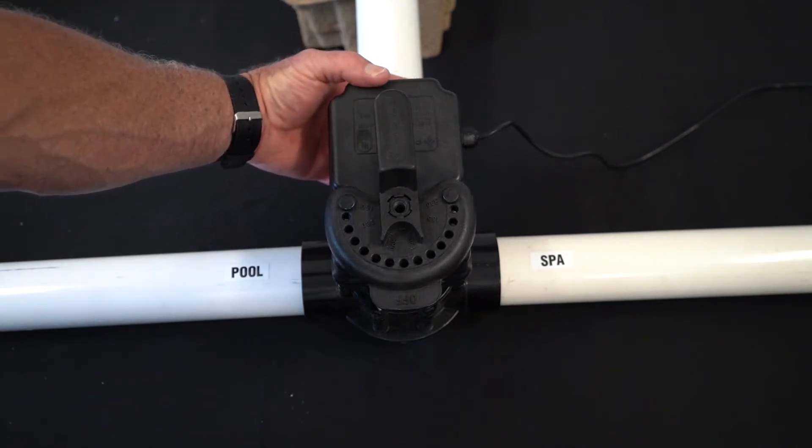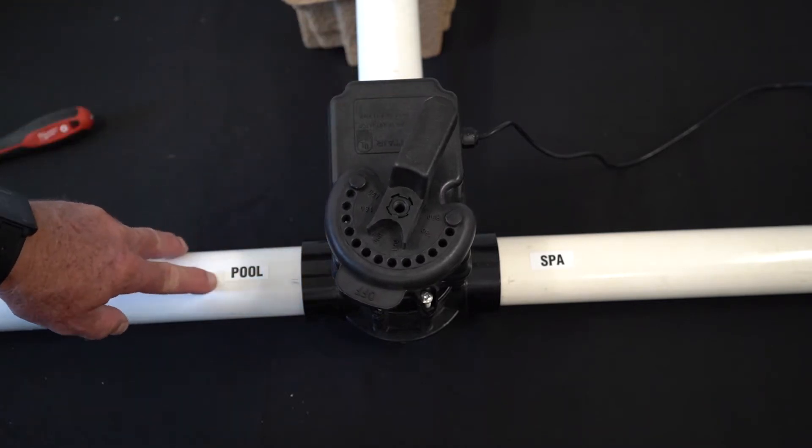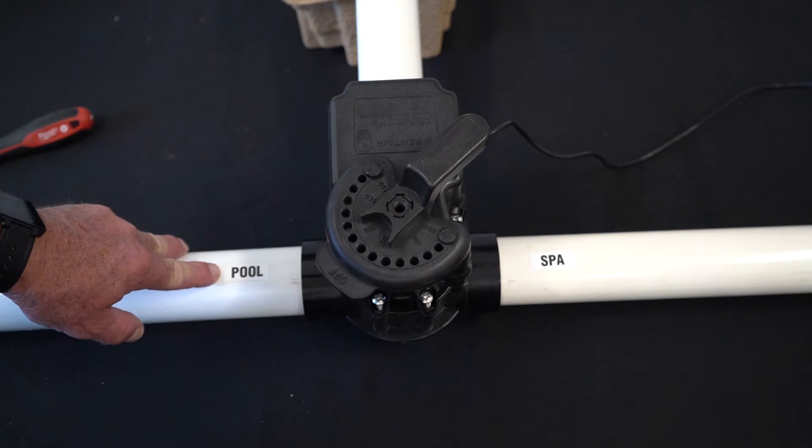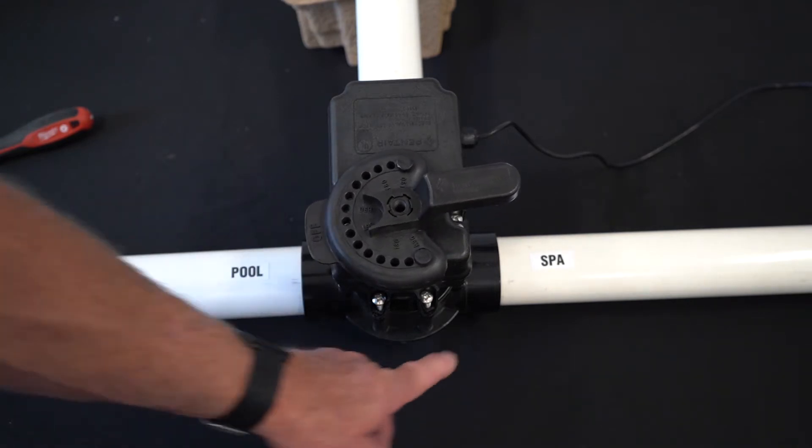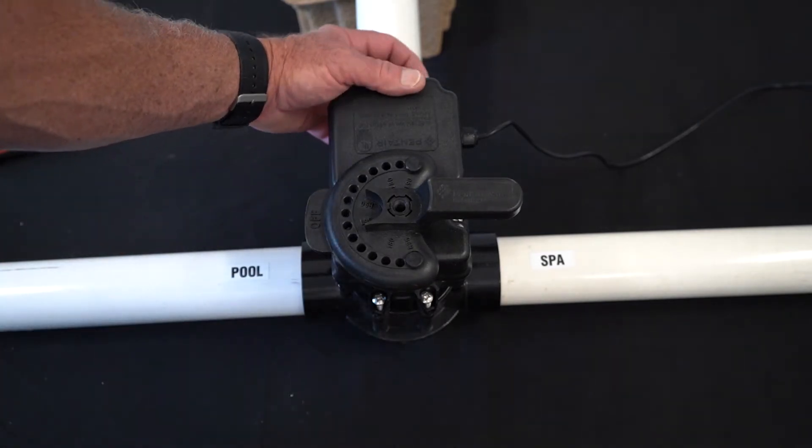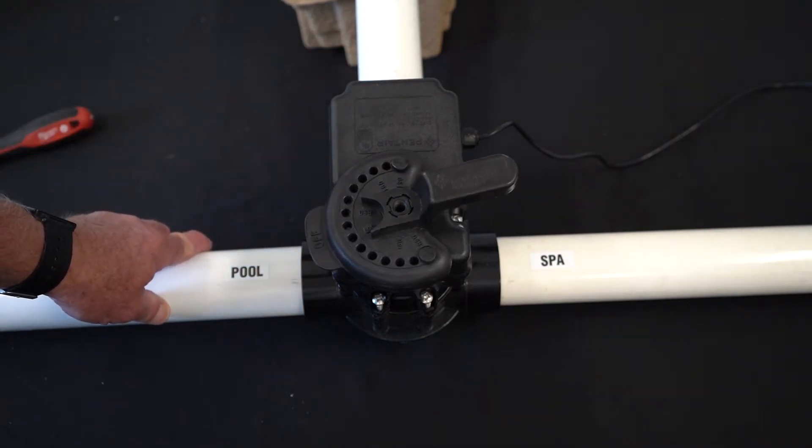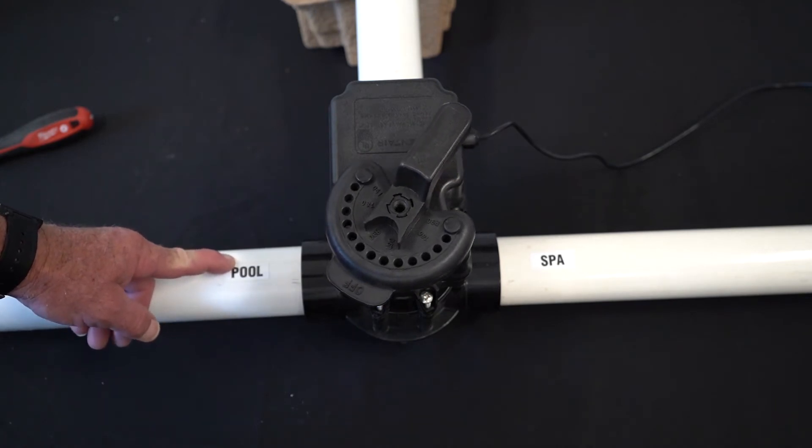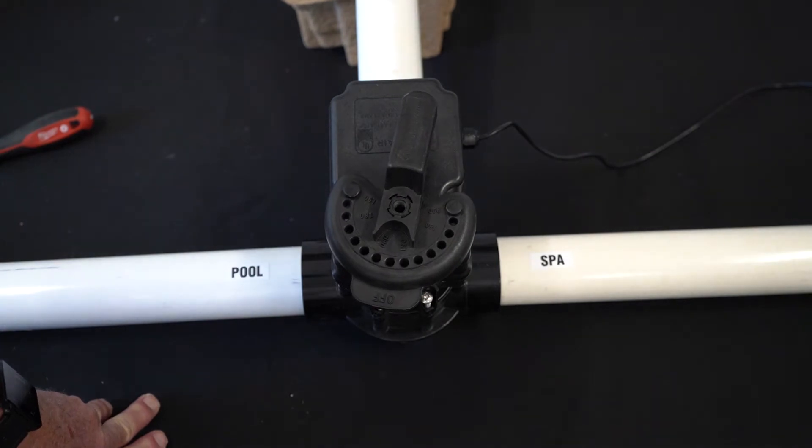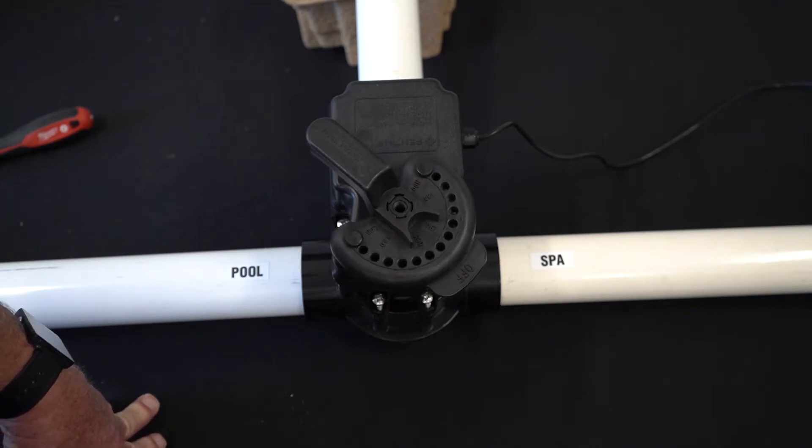So by flipping the switch on the back, and in this case up, I am going to move the actuator here to close off the pool return. This would allow all the water to go to the spa. And in the other direction, if I flip it all the way down, it will close off the spa, allowing all of the water to come back to the pool. And this is standard for a Pentair actuator out of the box. It is set for 180 degrees.